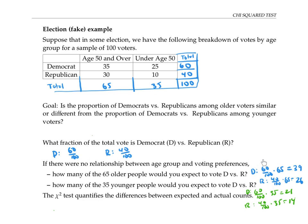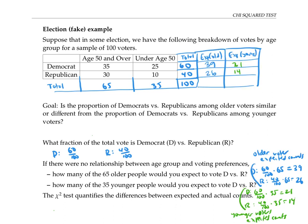So these top two numbers are my older voter expected counts. And the bottom two numbers are my younger voter expected counts. Let me add these counts to my table. So I have here the expected counts, if there's no relationship between age and voting preference, I want to compare these to the actual observed counts.